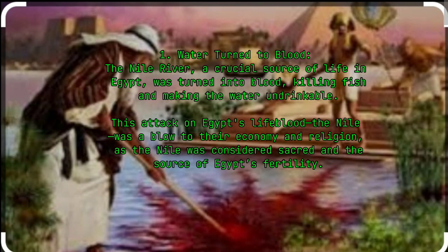1. Water turned to blood. The Nile River, a crucial source of life in Egypt, was turned into blood, killing fish and making the water undrinkable. This attack on Egypt's lifeblood was a blow to their economy and religion, as the Nile was considered sacred and the source of Egypt's fertility.